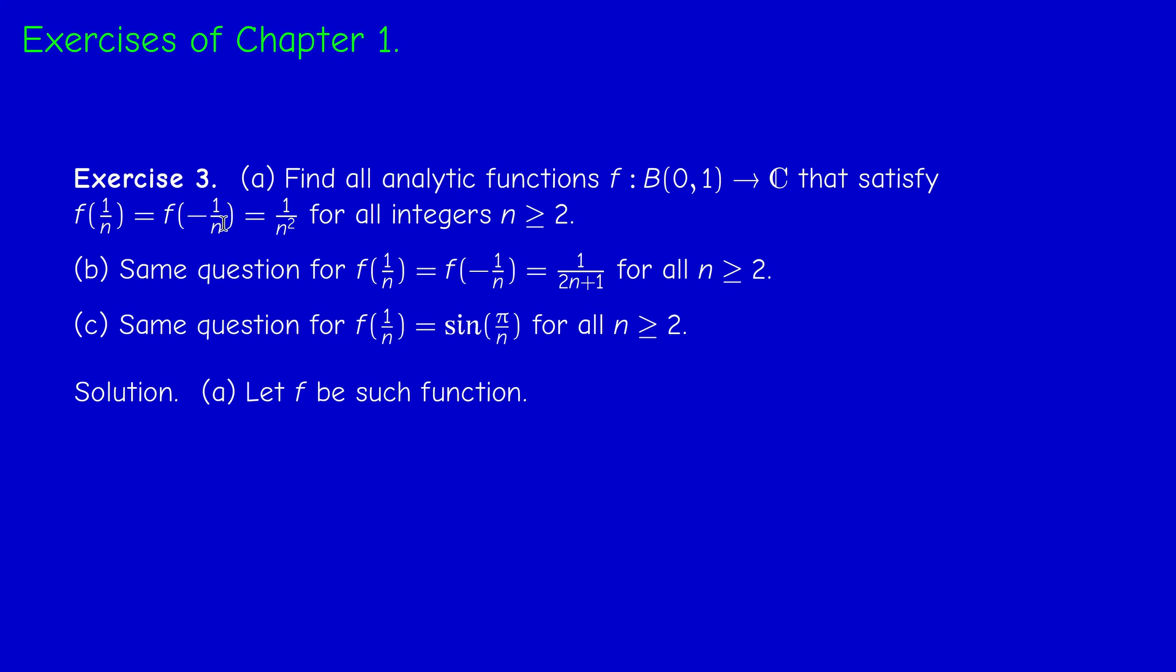Now, let us start by guessing something. If you replace 1 over n by z, we get z squared here. So already z squared is a function satisfying this equation.